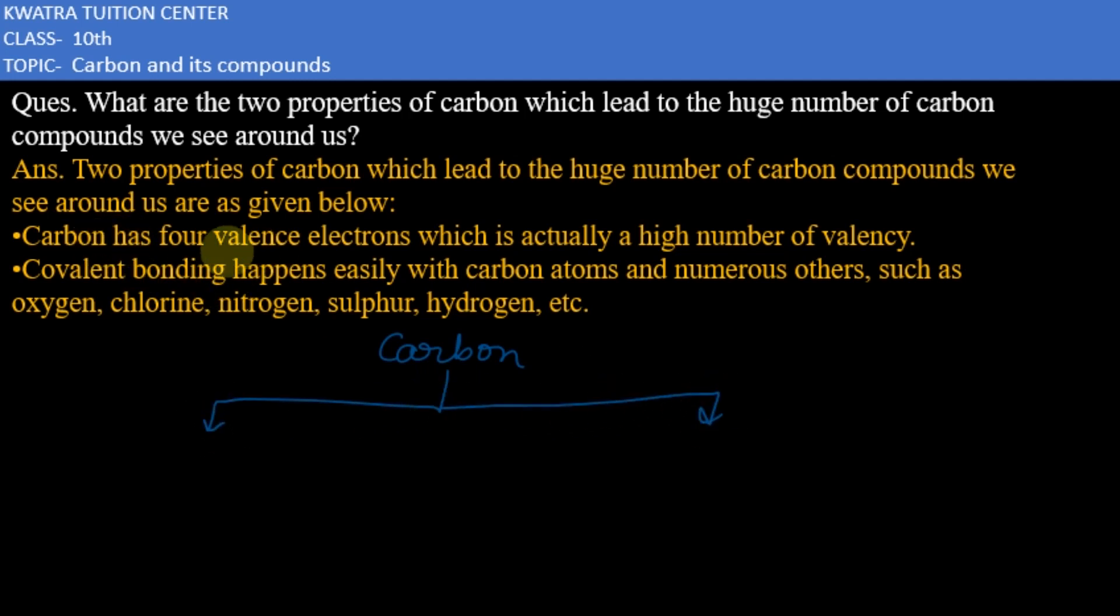First property is known as tetravalence. Tetra means four and valence is valence. It means valence is four like this.